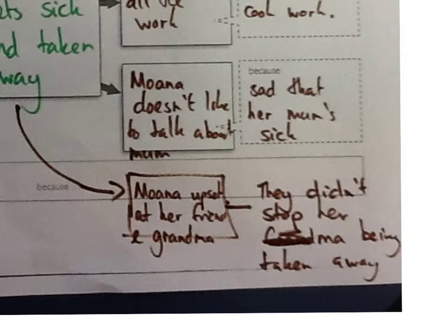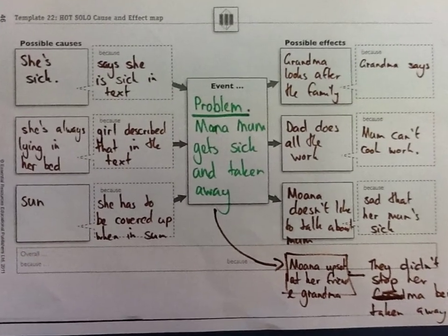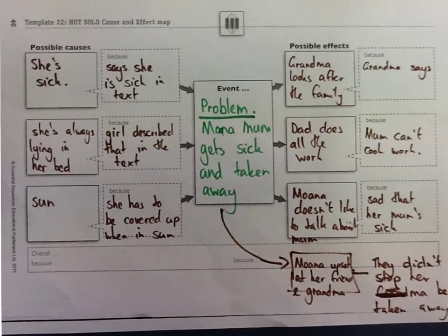The key thing is: when we explain the significant events in a text, we need to identify the causes and explain why they're a possible cause. And the second thing is to identify the effects and the possible effects.